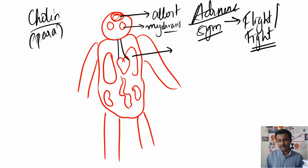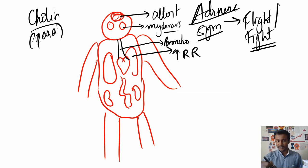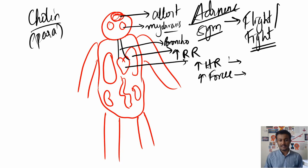Next is the respiratory system: it increases the rate of respiration and causes bronchodilation. Because of the increased respiratory rate, more oxygen goes inside; because of bronchodilation, more air also enters. You need that extra oxygen during a fight because you need more energy. For the heart, the same thing: increased heart rate and increased force of contraction — so we have increased chronotropic and increased inotropic effect.